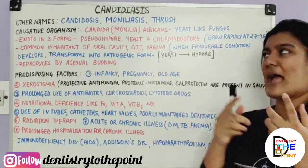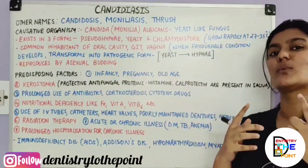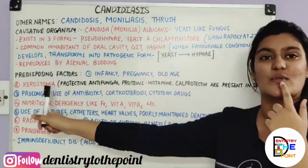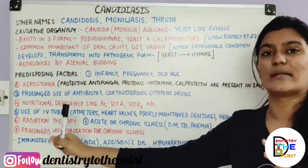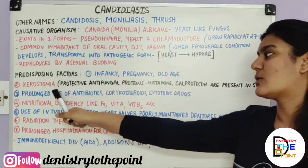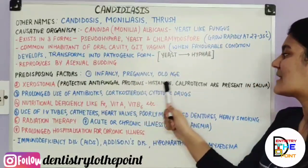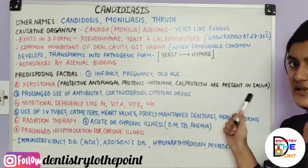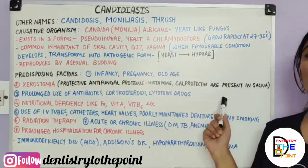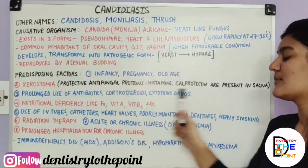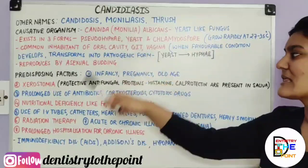Since we are dealing with the oral cavity, the next group of predisposing factors relates to the mouth. In the mouth, you have xerostomia, that is dry mouth. Protective antifungal proteins — histamins and cal proteins — are present in saliva. Since there is dryness of the mouth, saliva is not present in sufficient amounts, so these proteins are absent, and this may predispose to Candidiasis.